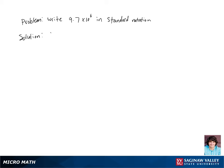Let's write 9.7 times 10 to the sixth power in standard notation. Our exponent is positive, so we're going to slide our decimal six places to the right. Then we're going to fill in the blank spaces with zeros, so our final answer is going to be 9,700,000.